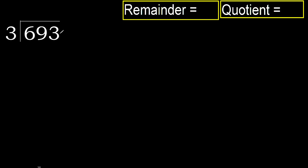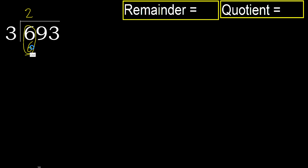693 divided by 3. 6 is not less, therefore with 6: 3 multiplied by which number is nearest to 6 but not greater? 3 multiplied by 3 is 9, which is greater. Multiply by 2: 6 is not greater. Subtract: 6 minus 6 equals 0.